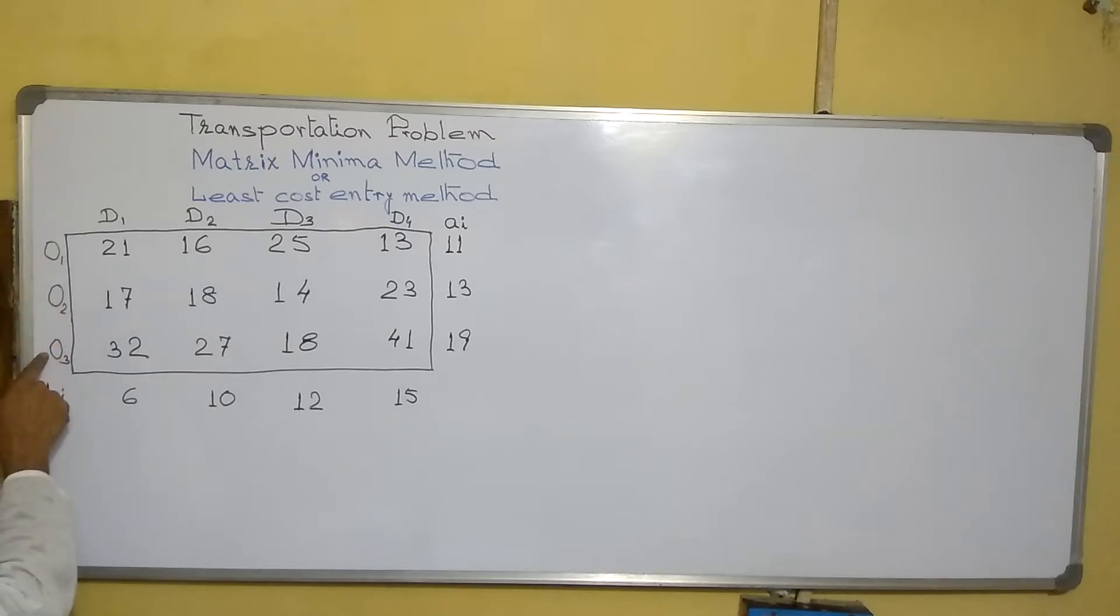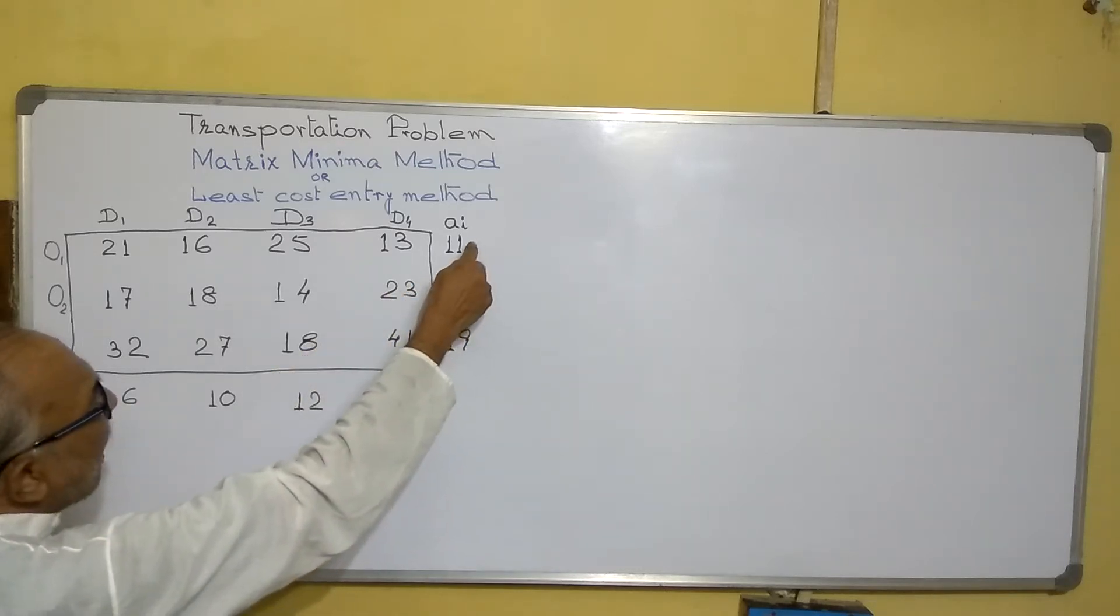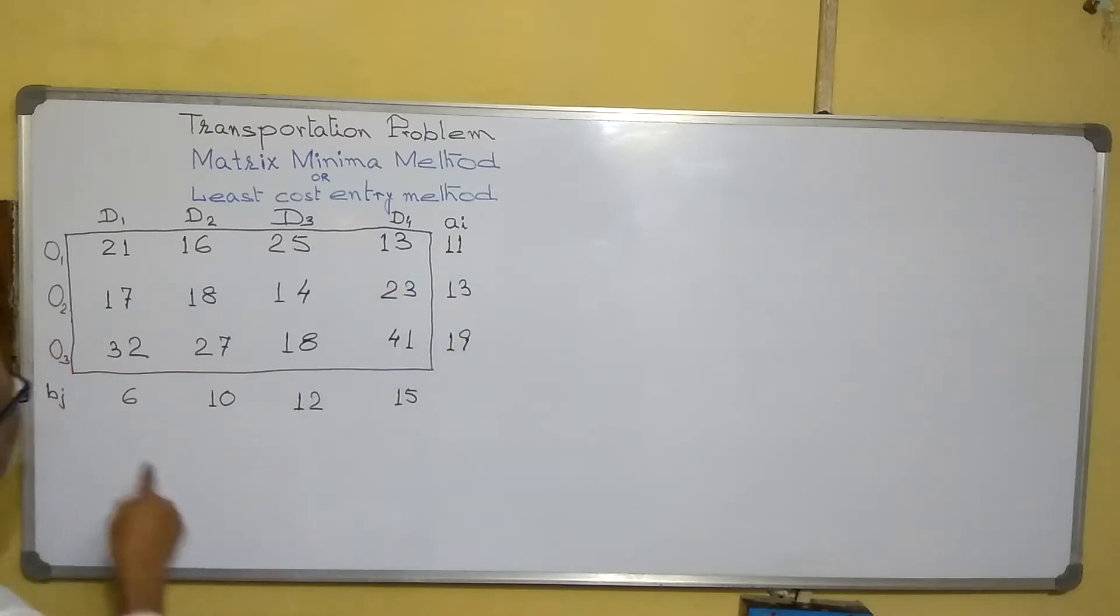There are three origins from where we will supply, and four destinations where we have to supply. These are the available stock, and these are the requirements.